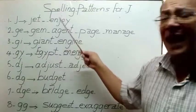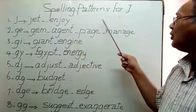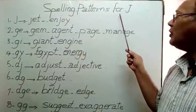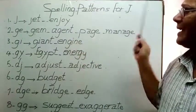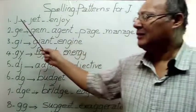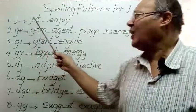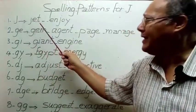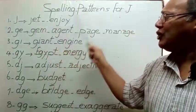Spelling patterns for the letter J. The first pattern is the letter J itself, as in: Jet, Enjoy.